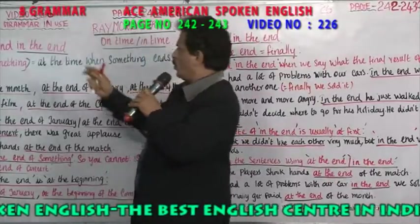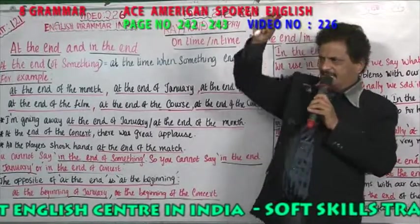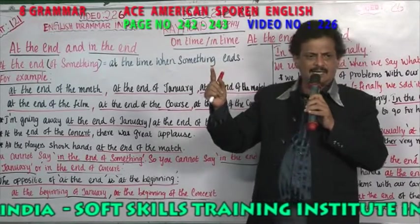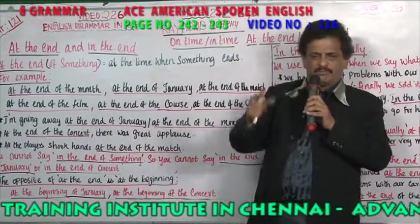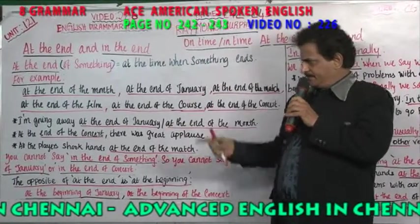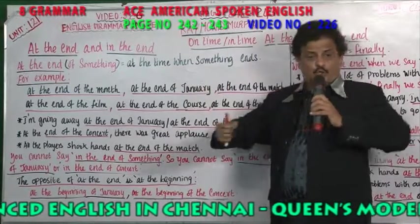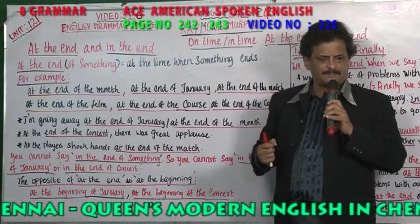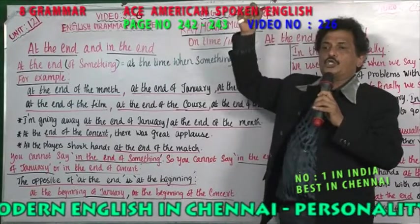Dear friends, what you are going to see is: what do you mean by 'on time'? On time means exactly at time. The train leaves exactly at time — the train leaves on time. He comes on time. What do you mean by 'in time'? Within a particular time to do something. He got up early in the morning — he got up in time to do exercise. So on time means punctuality. In time is used to do something.